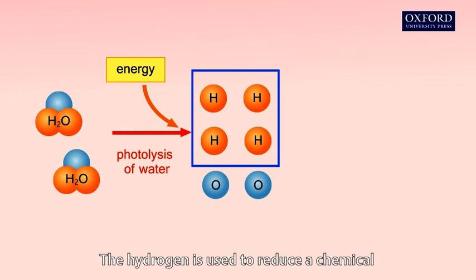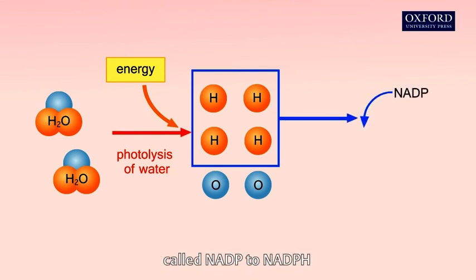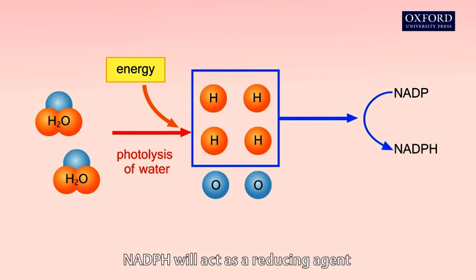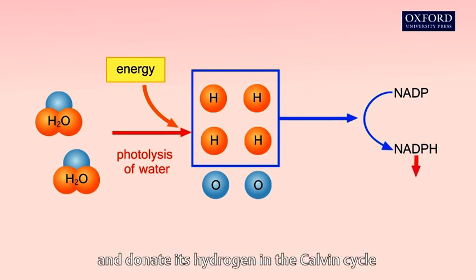The hydrogen is used to reduce a chemical called NADP to NADPH. NADPH will act as a reducing agent and donate its hydrogen in the Calvin cycle.